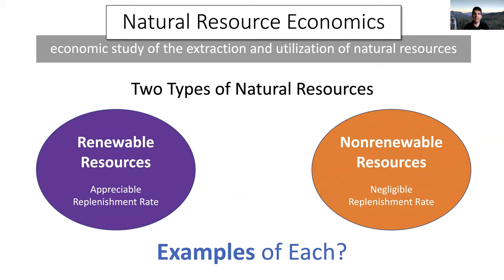There are two types of natural resources. Renewable resources have an appreciable replenishment rate — within the timescale of our use, they can replenish themselves. Sunlight is a renewable resource because you keep getting more. Non-renewable resources have a negligible replenishment rate — an aquifer technically gets replenished, but so slowly we often treat it as non-renewable. Oil gets replenished via geological processes so slowly we view it as finite. So renewability is really about the timescale of replenishment relative to our consumption.